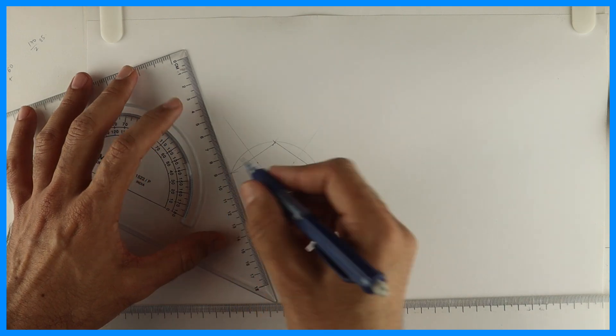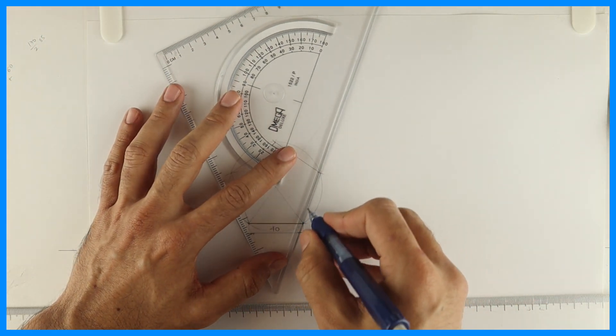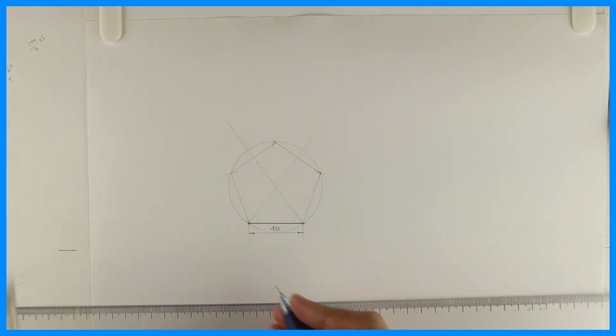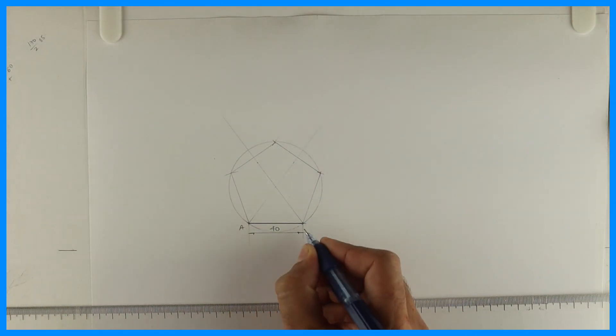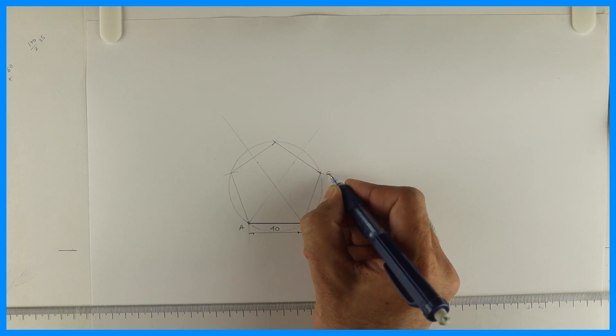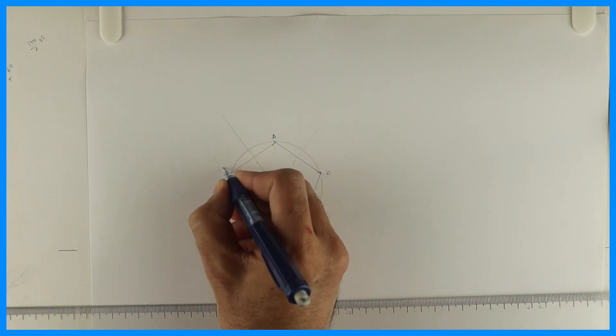You need to do it three four times, remember that is key in geometry. Whenever you're not getting it, you need to do it two three times. So we got pentagon ABCDE side 40 mm.